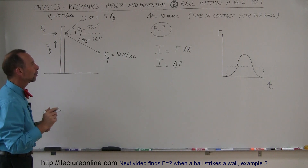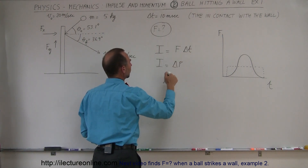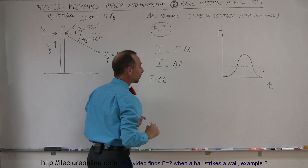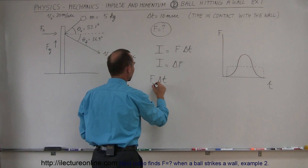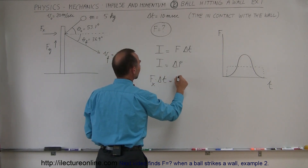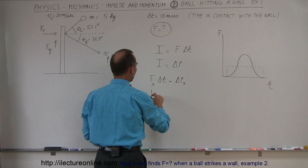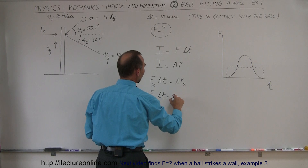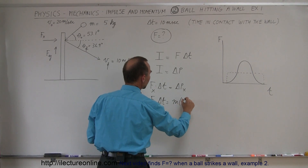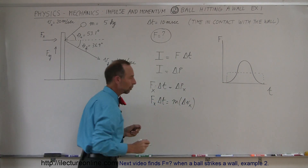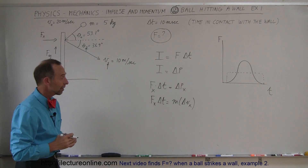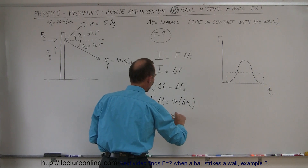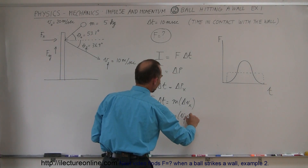In order to find the force, we set the two impulse expressions equal to each other. The force in the x-direction times delta t equals the change in momentum in the x-direction, or the force in the x-direction times delta t equals mass times the change in velocity in the x-direction. So the force in the x-direction times the change in time equals mass times v-final minus v-initial.